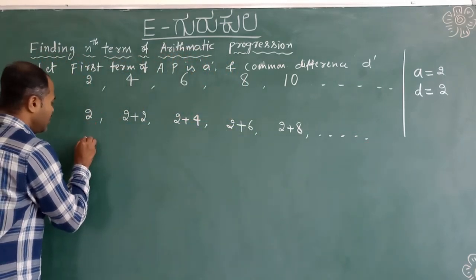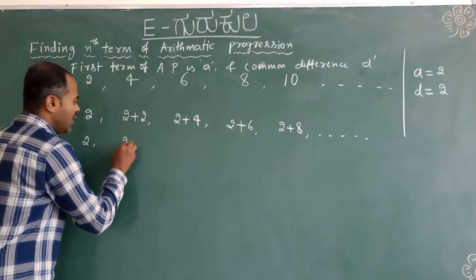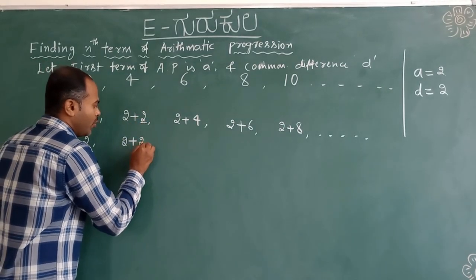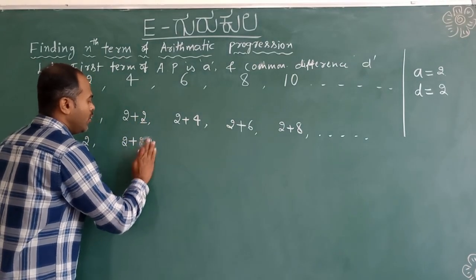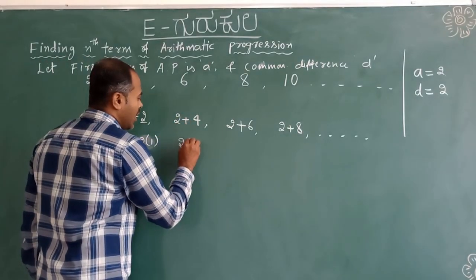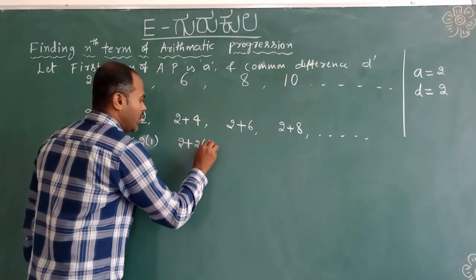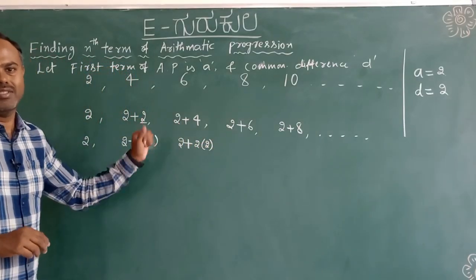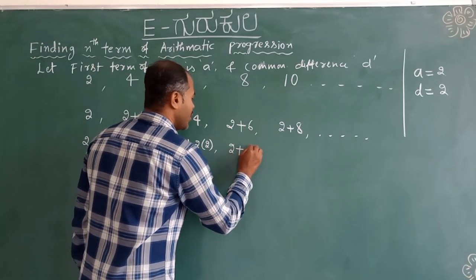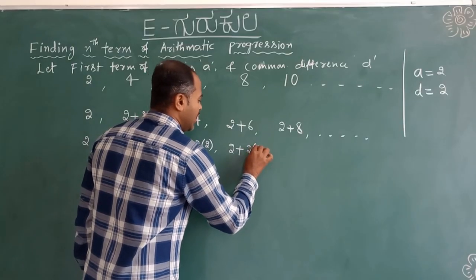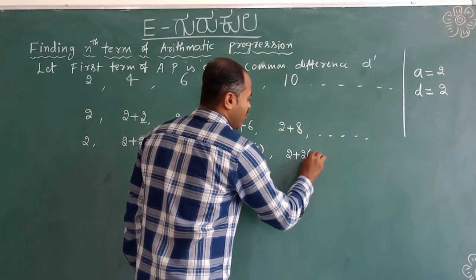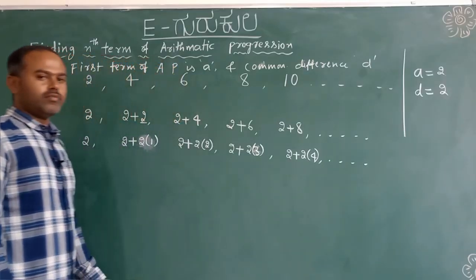Now I am going to rewrite these terms. The second term: 2 plus 2 into 1. The third term: 2 plus 2 into 2. The fourth term: 2 plus 2 into 3. The fifth term: 2 plus 2 into 4, and so on.